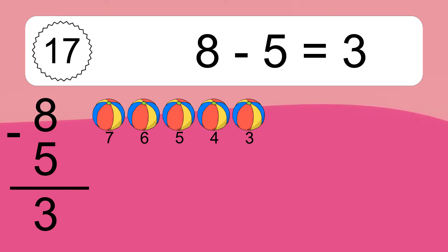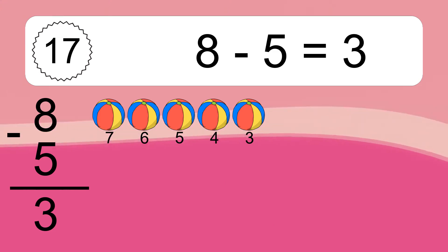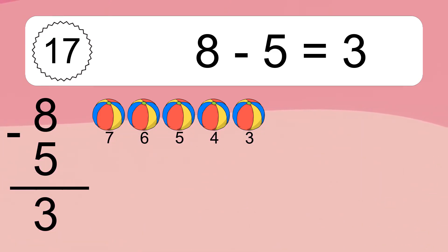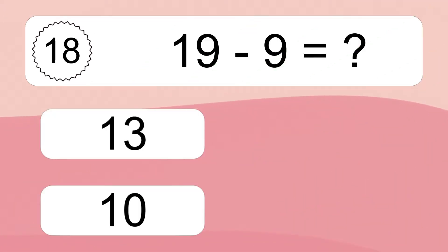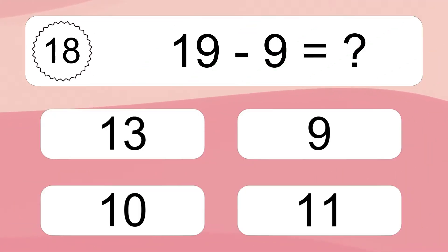Let's count it: 7, 6, 5, 4, 3. 19 minus 9 equals what?